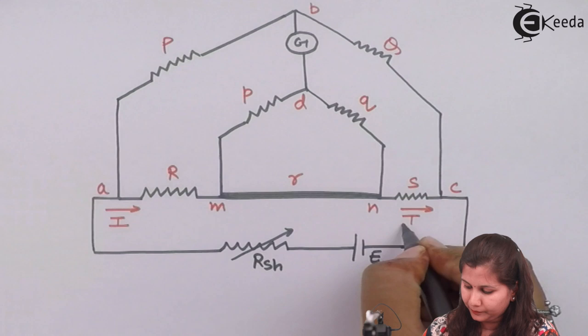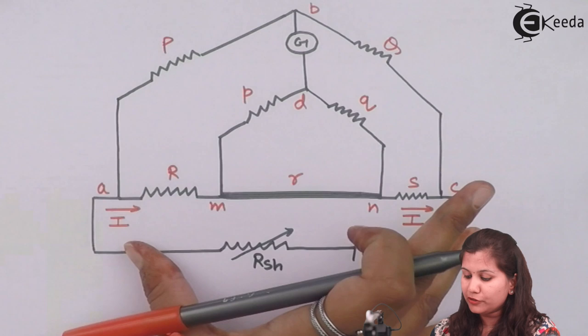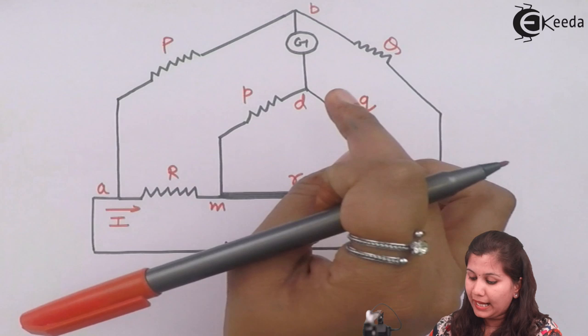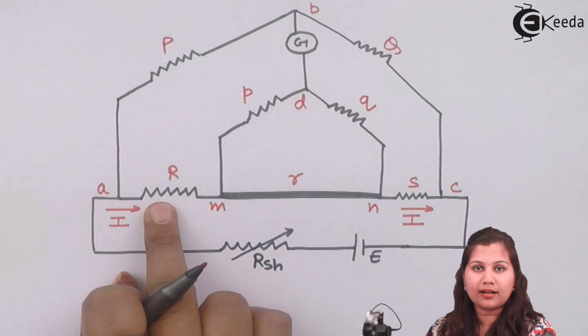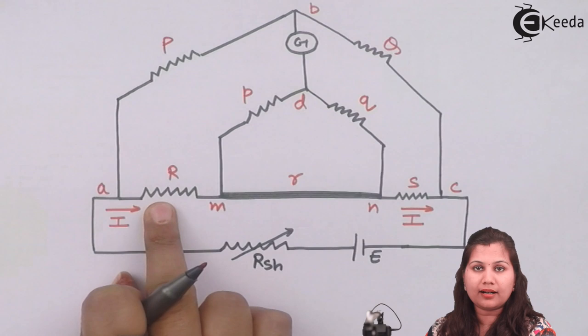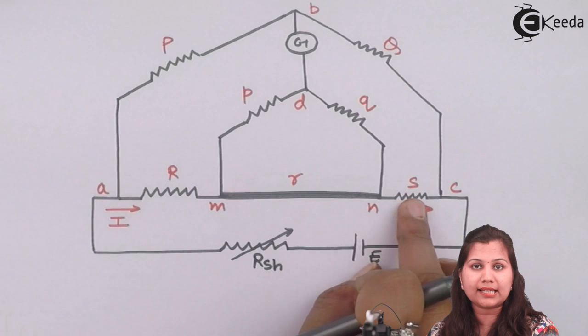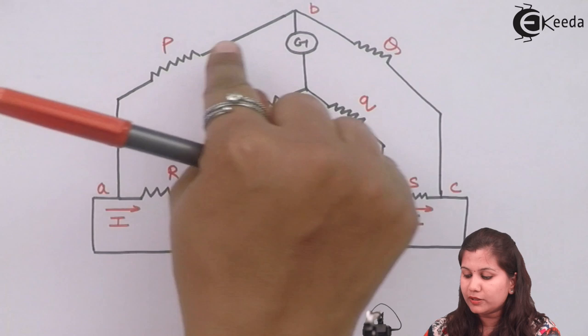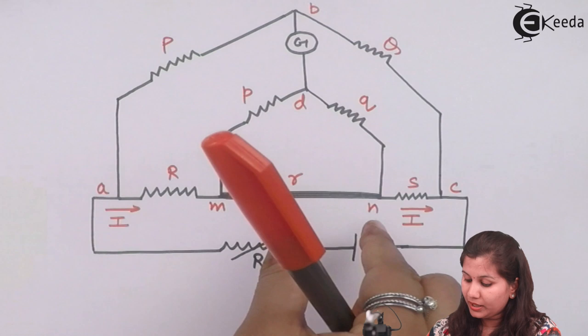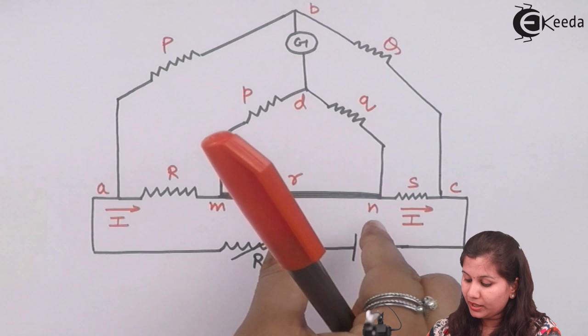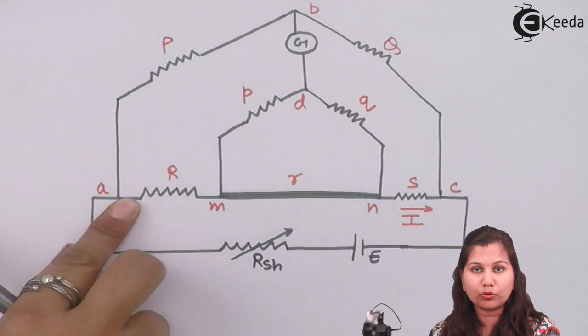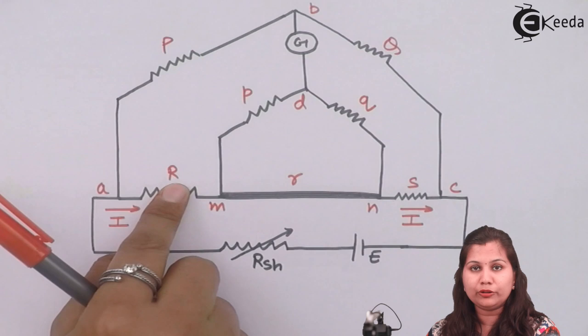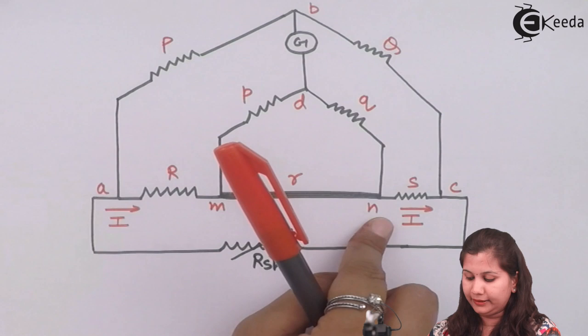This is the circuit diagram for the Kelvin double bridge. There are two ratio arms: one set P/Q and another set small p/small q, with the galvanometer connected between them. R is the unknown resistance and S is the standard resistance, just like in the Wheatstone bridge. Small r is the resistance of the connecting lead connecting the unknown resistance to the standard resistance.